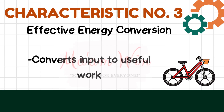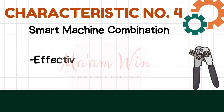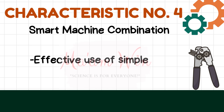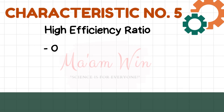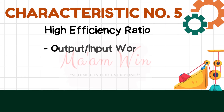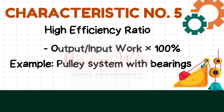Characteristic number 3: Effective energy conversion — it converts input to useful work. Example: bicycle gears. Characteristic number 4: Smart machine combination — effective use of simple machines. Example: can opener. Characteristic number 5: High efficiency ratio — output over input work times 100%. Example: pulley system with bearings.